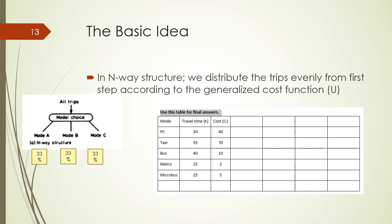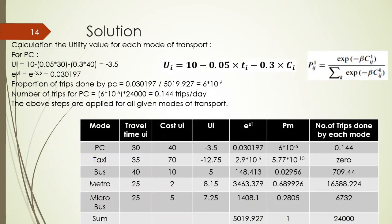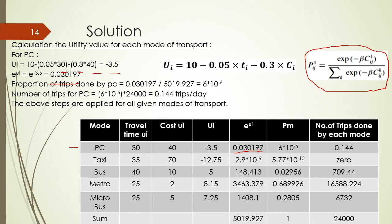The n-way structure example shows that if we have three modes, trips will be evenly distributed over them. To calculate the utility value for each mode, consider the passenger car: using the utility function, 10 − 0.05 × 30 − 0.3 × 40 gives negative 3.5. Then e to the power of u(i), i.e., e^(−3.5), equals 0.030197. The proportion of trips done by passenger cars equals e^(u_i) for passenger cars (0.030197) divided by the sum of all e^(u) values for all transport modes.